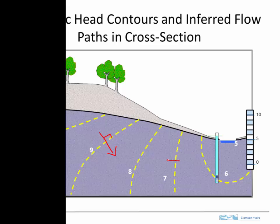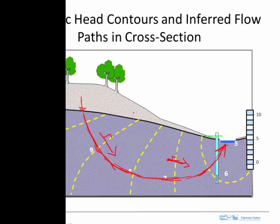Over here it would have a direction more like that where it's perpendicular. We can also infer that recharge entering the water table right here would take a path somewhat like this, where the path line is drawn perpendicular to the contours. It's going to ultimately discharge to the stream. Recharge that enters right here takes a path perpendicular to these head contours, with flow going from uplands and discharging to the stream. That's the kind of flow path we would expect, and we can infer that from these head contours.